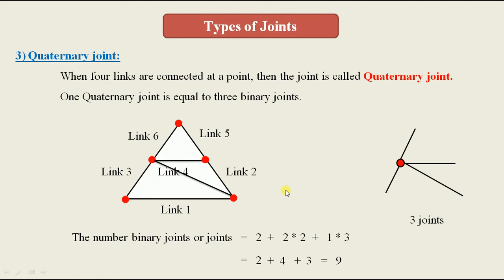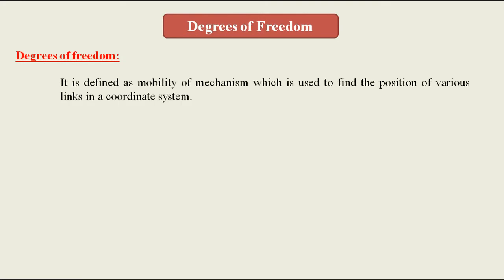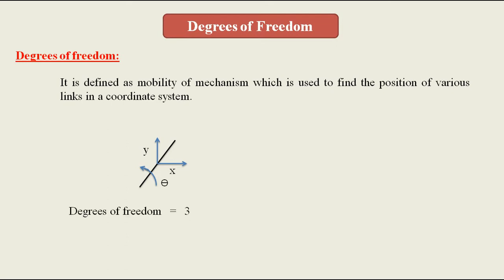Next is degrees of freedom, defined as the mobility of a mechanism used to find the position of various links in a coordinate system. A single link placed on a plane can move in the x-direction, y-direction, and can also rotate — giving it three degrees of freedom. When that link is connected to a fixed link, it loses translation in x and y but retains rotational motion.